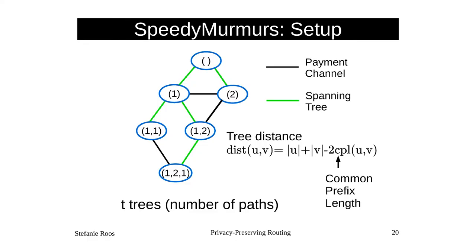We want more than one payment path, because you might have a large payment and want to split it over several paths if one doesn't have enough credit. We build two different spanning trees so people can use different paths and use the sum of all partial payments as the total. Splitting over several payments also helps with hiding the transaction value.